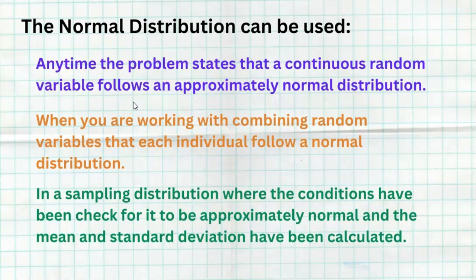The normal model can be used in many situations. Anytime a problem states that a continuous random variable follows an approximate normal distribution, and you have a mean and standard deviation, you can use the normal model. Also, when working with combining random variables where each individual one follows a normal model, the combined result follows a normal distribution as well. And in sampling distributions where conditions have been checked, we can find the mean and standard deviation of that sampling distribution and use the normal model — including to find p-values for significance tests.